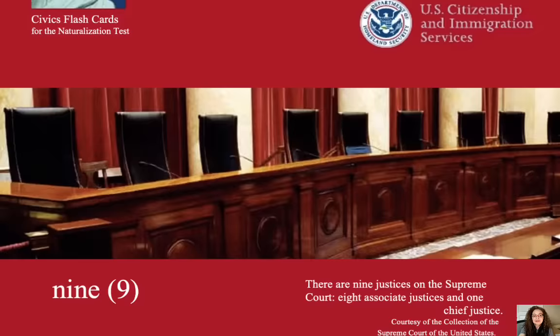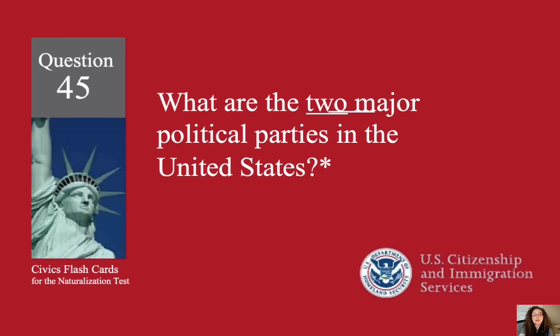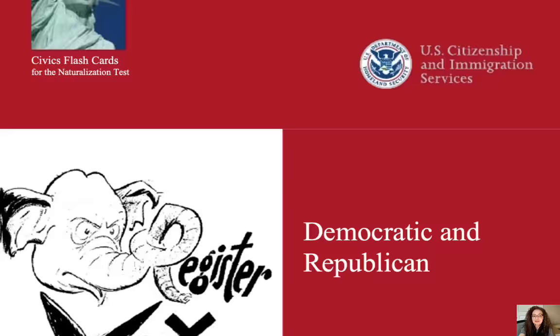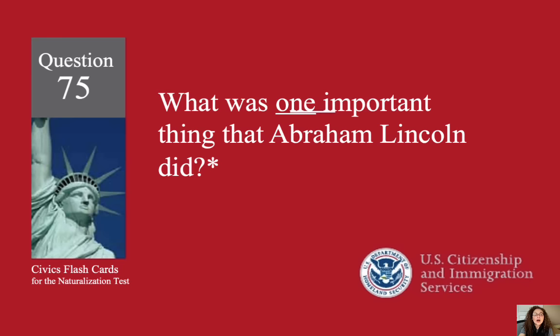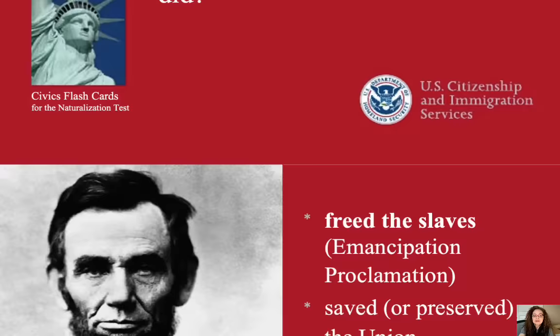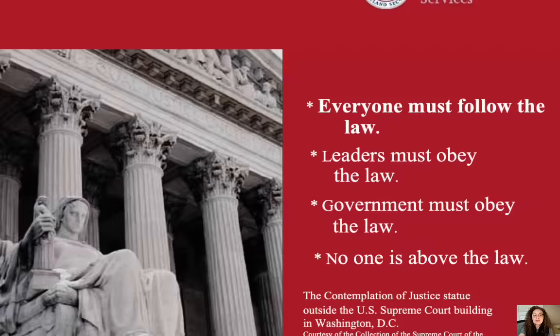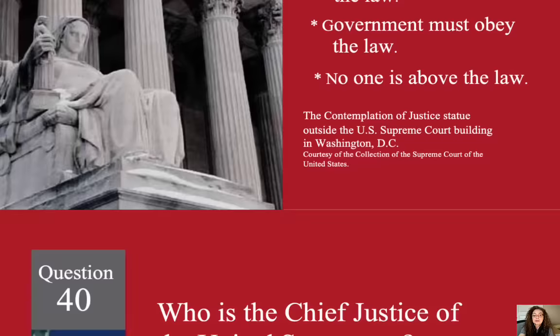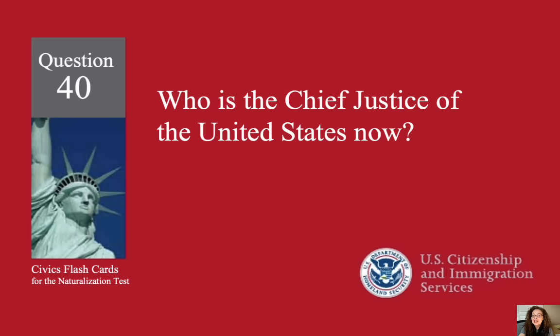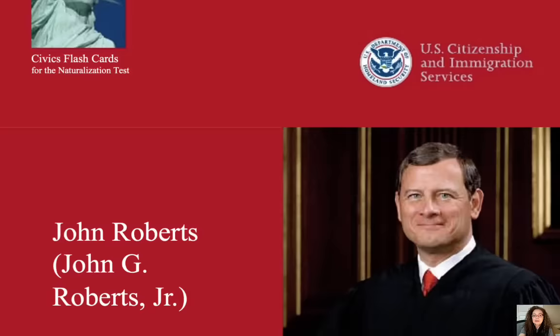What are the two major political parties in the United States? Democratic and Republican. What was one important thing that Abraham Lincoln did? Freed the slaves. What is the rule of law? Everyone must follow the law. Who is the chief justice of the United States now? John Roberts.